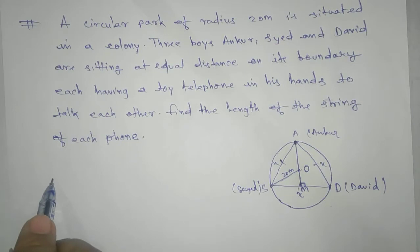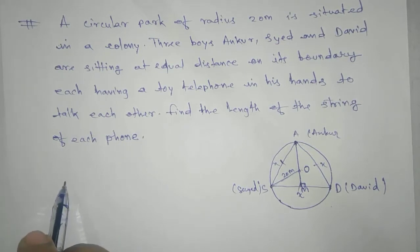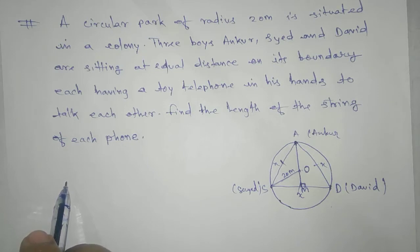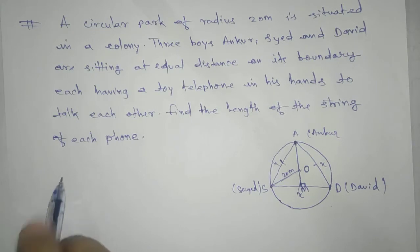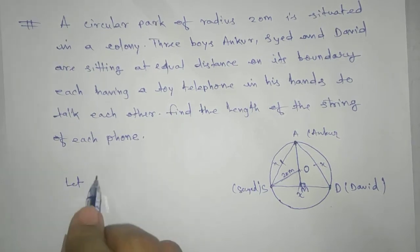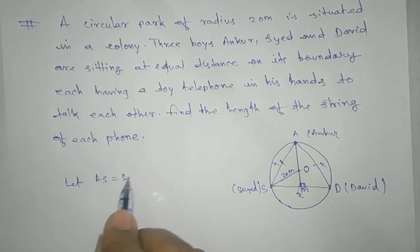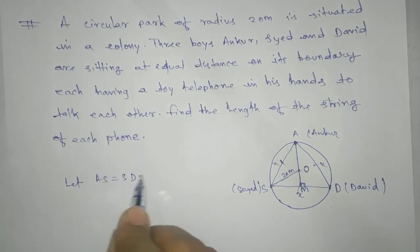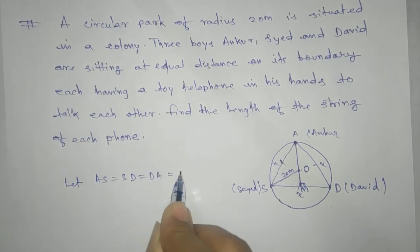Let A be the position of Ankur, S be the position of Syed, and D be the position of David. Therefore, since they are sitting at equal distance, ASD is an equilateral triangle. So AS equals SD equals DA equals X.